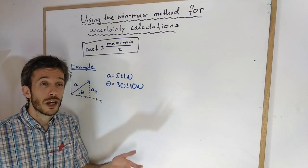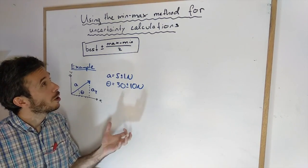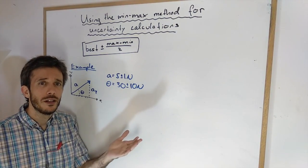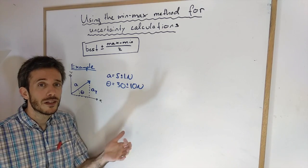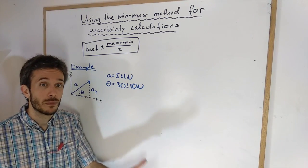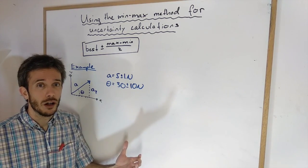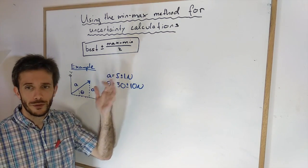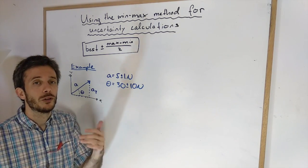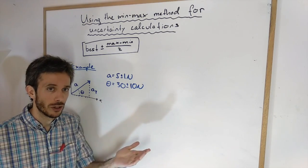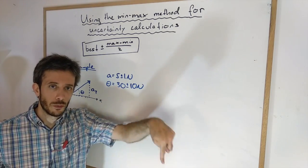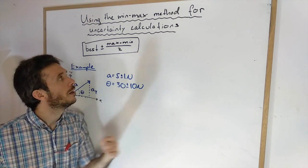In two previous videos I have shown you what you do if you have uncertainties in measurements and then have to do some calculations based on those measurements. There is a video on addition and subtraction and another one on multiplication and division. The links of those videos should be somewhere below in the description.